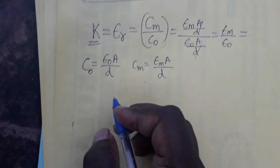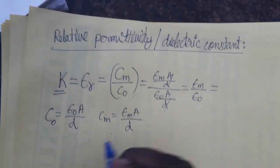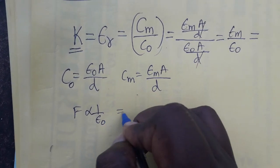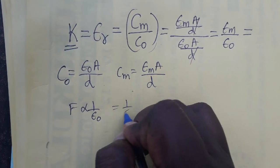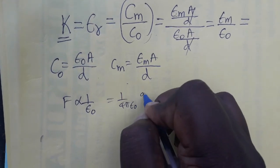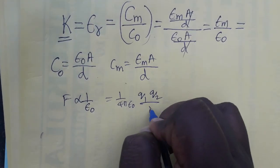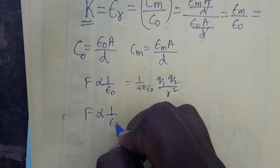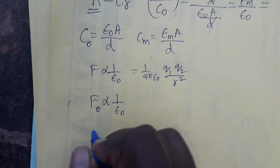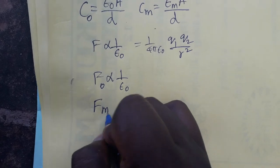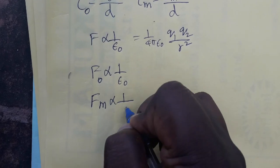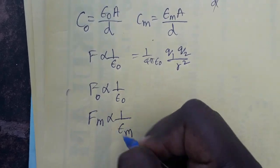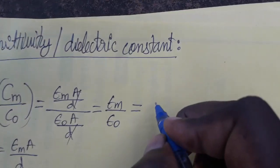Now we relate this with force. Force is inversely proportional to ε₀. From Coulomb's law, force in air F = (1 / 4πε₀) × (q₁q₂ / r²). So force is inversely proportional to ε₀. Similarly, force in a medium is inversely proportional to the permittivity of that medium εₘ.